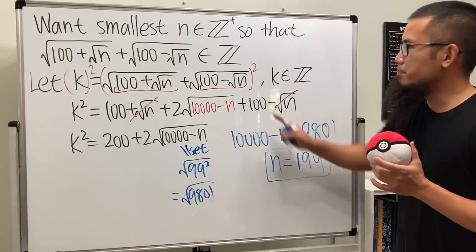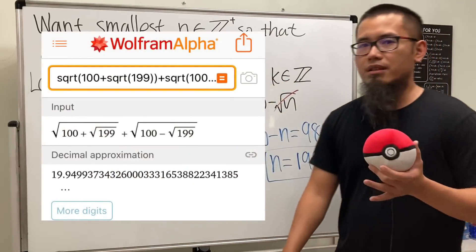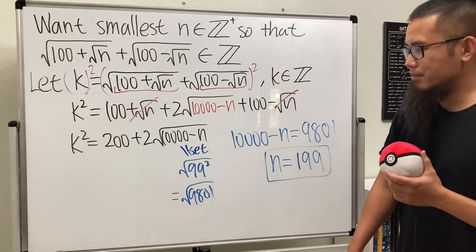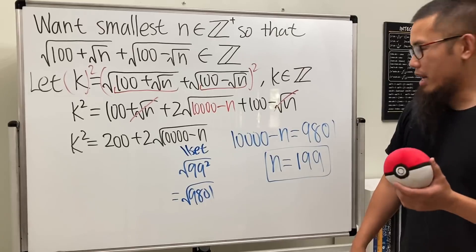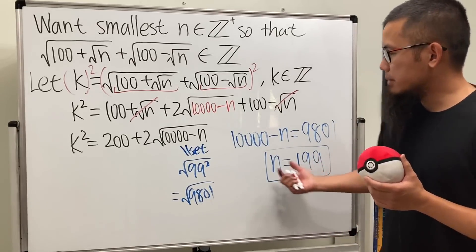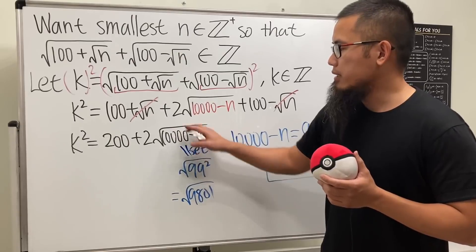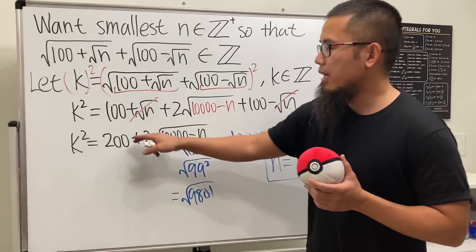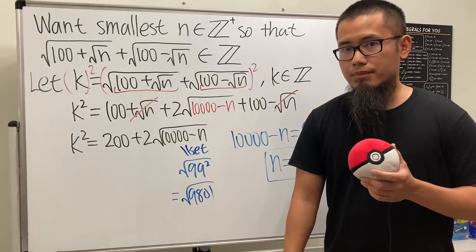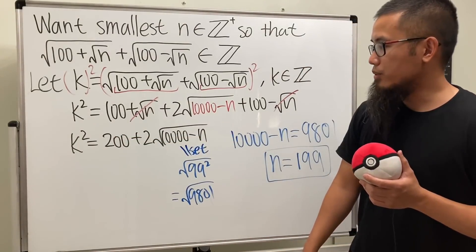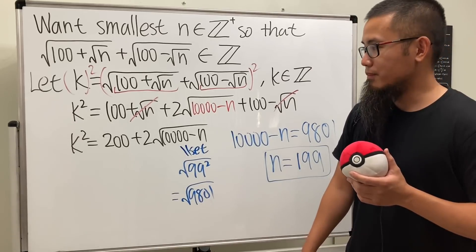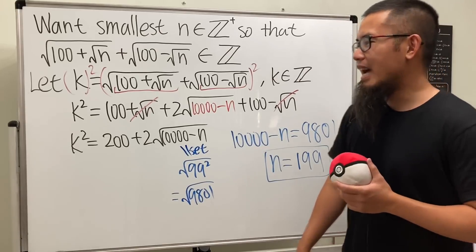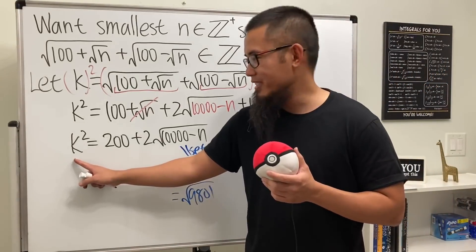If we put n = 199 back into the original expression, unfortunately it doesn't give us an integer. Let's talk about why. If we substitute back, we get 2 times 99 plus 200, which is 398. Unfortunately, 398 is not a perfect square, so k squared cannot equal 398.